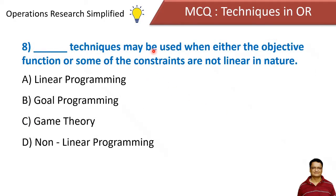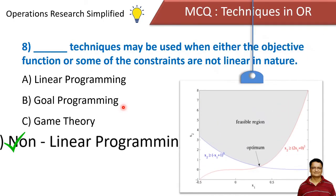Blank technique may be used when either the objective function or some of the constraints are not linear in nature. Options: linear programming, goal programming, game theory, and non-linear programming. Correct answer is non-linear programming. Here, the constraints can take the shape of a curve instead of a straight line, so these constraints are not linear in nature.